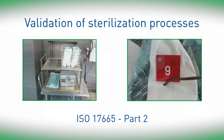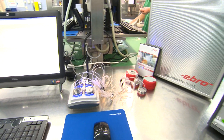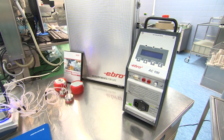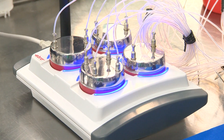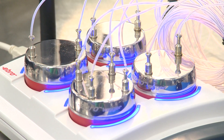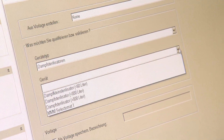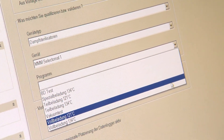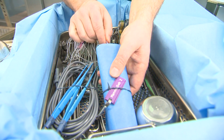Details regarding the validation of steam sterilization processes are provided in ISO 17665, part 2. An important part of the validation procedure is the measurement and logging of the pressure and temperature in the sterilizer during the process. To validate steam sterilization processes in large sterilizers, up to 12 temperature sensors and one pressure sensor are used. After the programming of the data loggers, the temperature sensors are placed at the critical points and at the reference sensor probe of the steam sterilizer, as well as between the loading items.